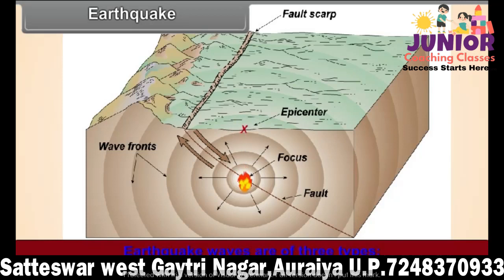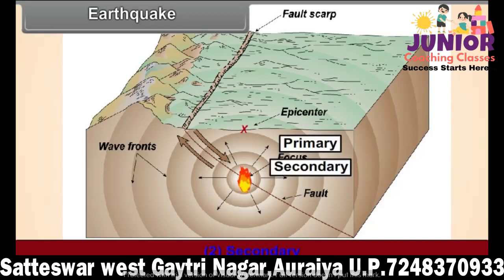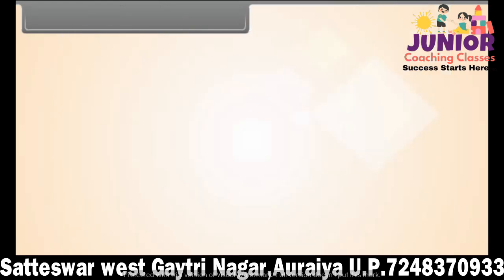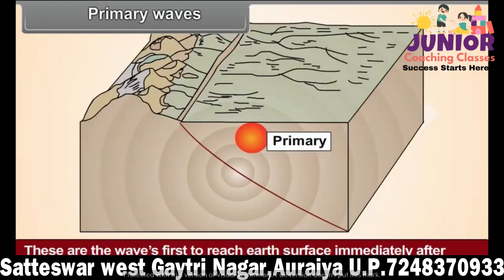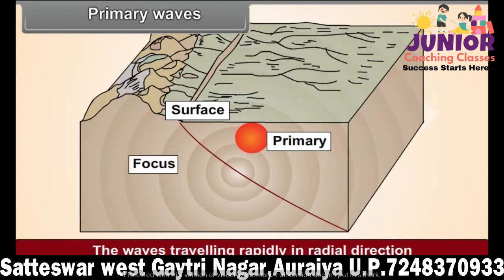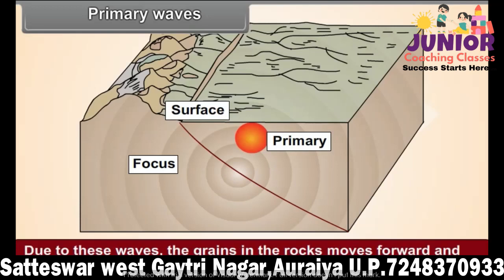Earthquake waves are of three types: primary, secondary, and surface waves. Primary waves are the first to reach the earth's surface immediately after the energy is released in the interior. These waves travel rapidly in a radial direction. Due to these waves, the grains in the rocks move forward and backward in the direction of the waves.